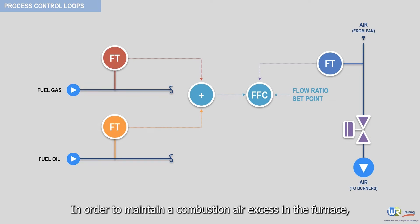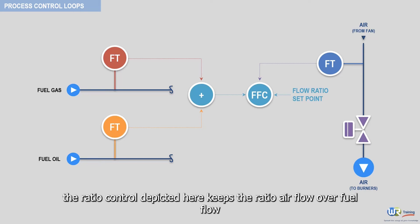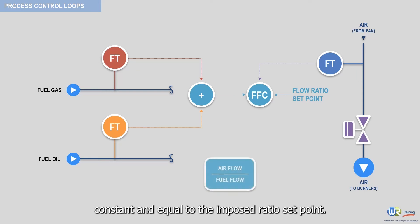In order to maintain a combustion air excess in the furnace, the ratio control depicted here keeps the ratio airflow over fuel flow constant and equal to the imposed ratio set point. This may be shown symbolically by FFC, which stands for flow fraction controller, or FRC for flow ratio controller.